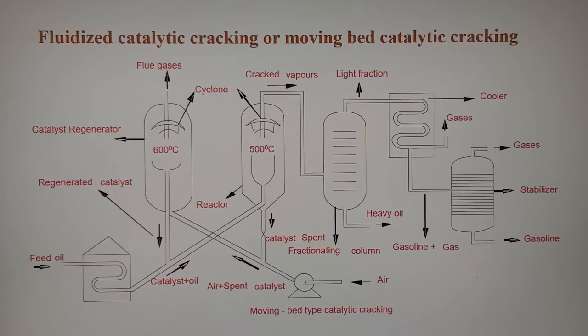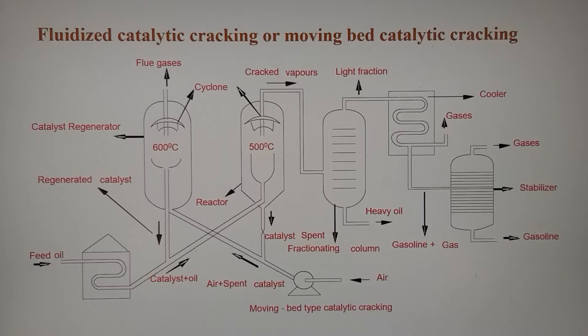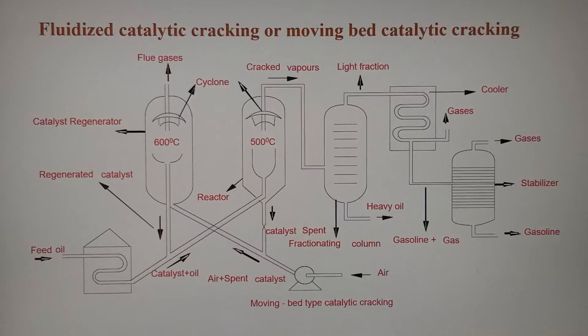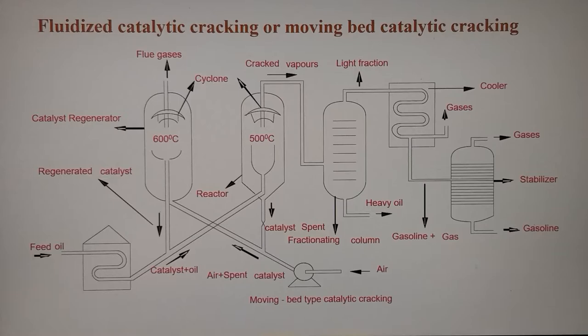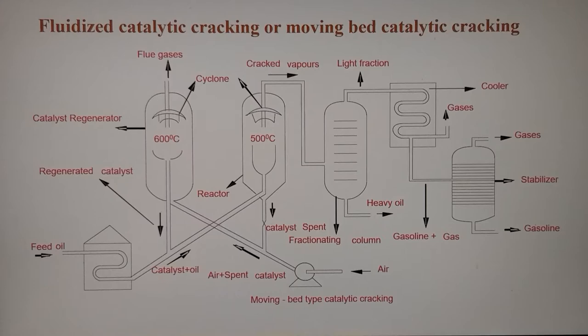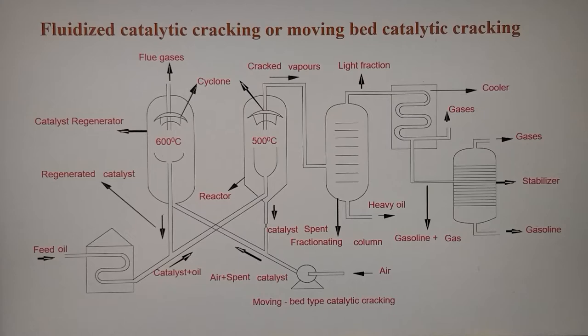In the reactor tower at 500 degrees, the catalyst causes the higher molecular weight hydrocarbons to get cracked. This tower is fitted with a cyclone at the top, which helps in retaining the solid particles and allows only the cracked vapors to go into the pipe. From the reactor, the cracked vapors are led into the fractionating tower through a pipe.